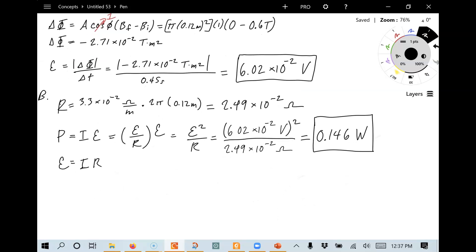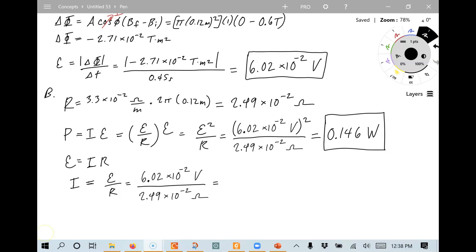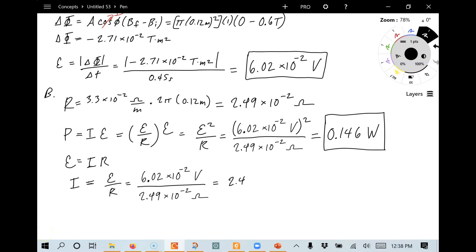Now, it didn't ask us to do this, but let's just say we wanted to calculate the current as well. This is the current that is induced via electromagnetic induction in the coil. That would be the EMF, the induced EMF divided by the total resistance of the coil. There's our numbers. And this comes out to 2.42 amps.